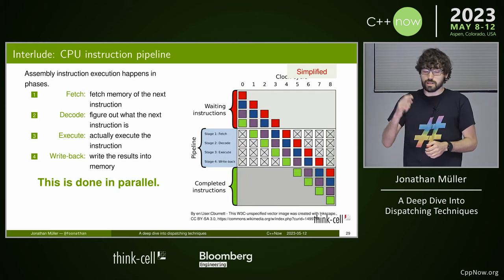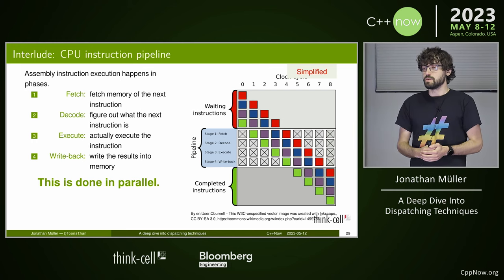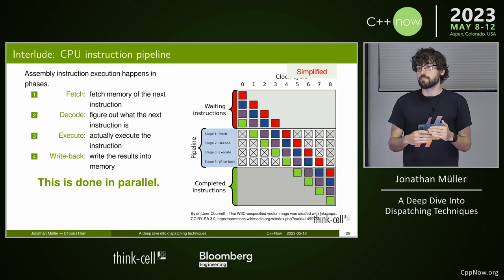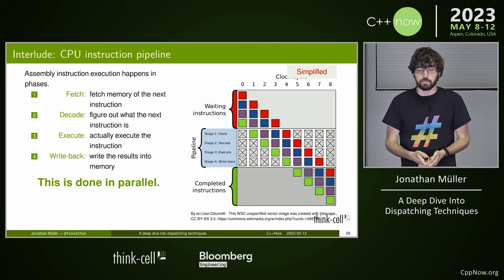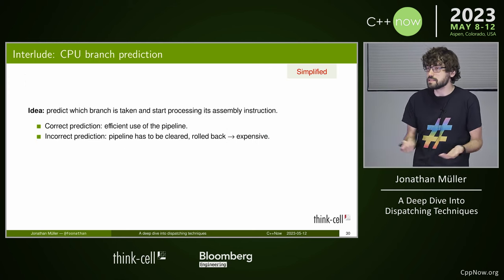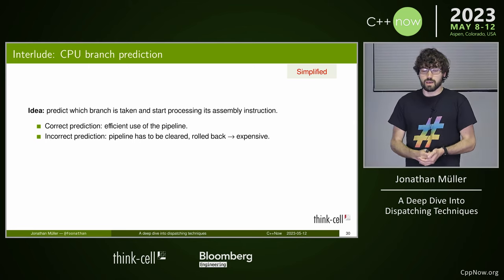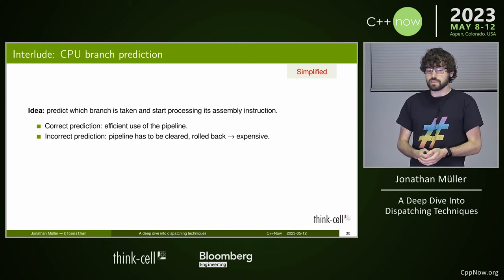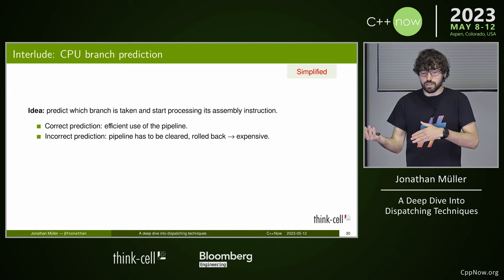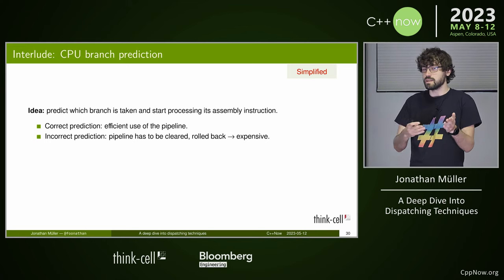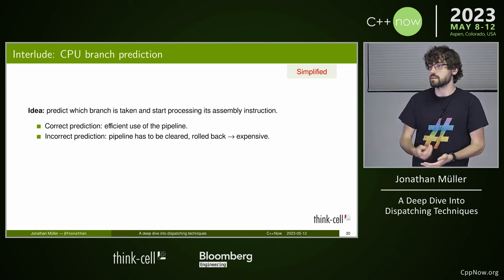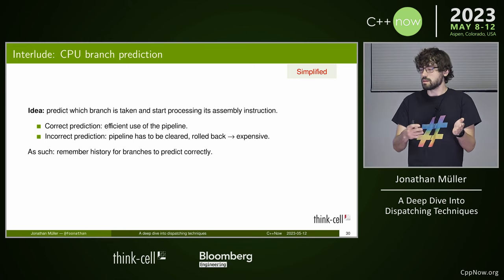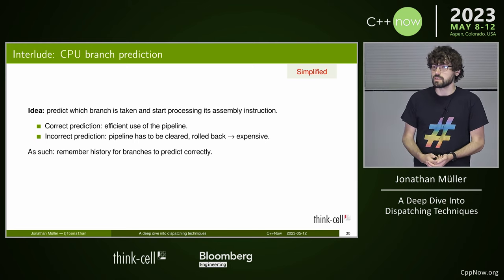So the CPU just guesses — it makes a prediction about whether a branch is taken to predict the next instruction. If the prediction is correct, it makes efficient use of the pipeline. If not, it has to stop everything, roll back the pipeline, and start executing the real instruction. The CPU remembers history for each branch: most of the time we took it, so it predicts we'll take it again speculatively.